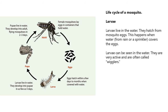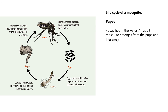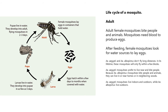Larvae live in the water and hatch from mosquito eggs when water from rain or a sprinkler covers the eggs. Larvae can be seen in the water and are very active, often called wigglers. Pupae also live in the water, and an adult mosquito emerges from the pupae and flies away. Adult female mosquitoes bite people and animals — mosquitoes need blood to produce eggs. After feeding, female mosquitoes look for water sources to lay eggs.